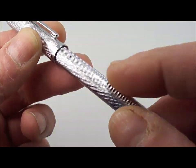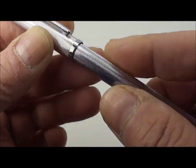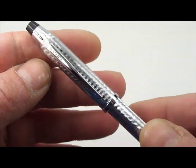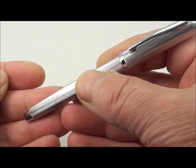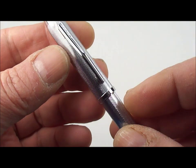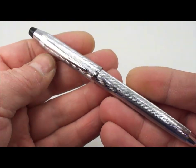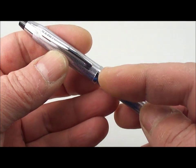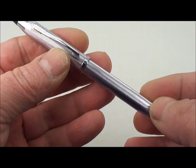In fact, the engine turned barleycorn pattern is beautiful. You can actually feel it to the touch, so there's no wear to it or anything like that. The Cross Century - they actually brought out two models. The original Cross Century didn't have this cap band here, it was slightly thinner as well.